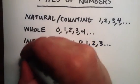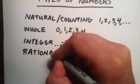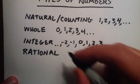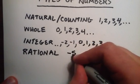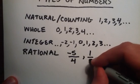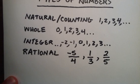Next, we have rational numbers. Rational numbers are numbers that can be written as a ratio of two integers. For instance, minus five over four, one third, two fifths. These are all examples of rational numbers.